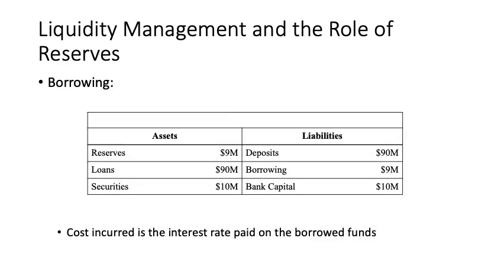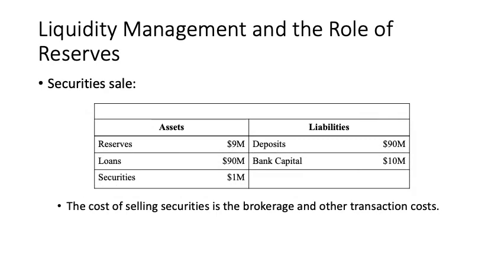To solve this liquidity problem, the bank has many different ways to raise funds. One way is borrowing from another bank. As shown, borrowing increases by $9 and this exactly equals the increase in reserves. Why $9? Because required reserves are 10% of deposits — multiplying $90 in deposits by 10% equals $9. A second way is to sell securities: securities decrease from $10 to $1 and the difference of $9 goes into reserves.